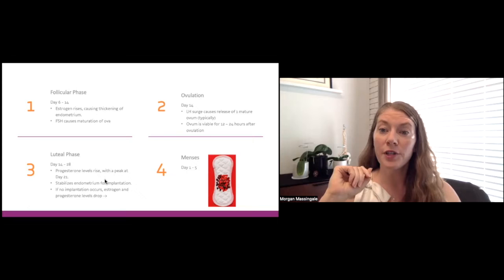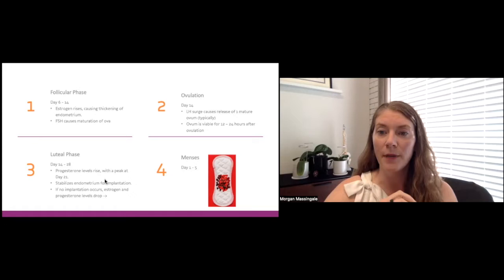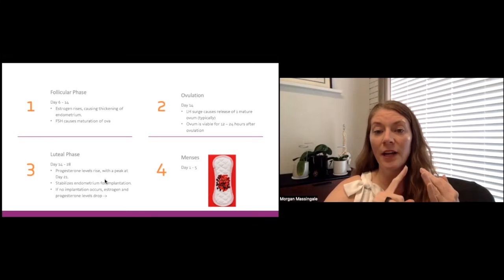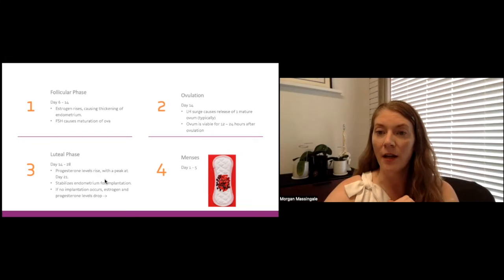That progesterone, that rising progesterone stabilizes the lining of the uterus, which is preparing that endometrium for implantation. If no implantation occurs, the levels of estrogen and progesterone will both drop significantly. And that is actually what causes the shedding of that uterine lining leading to menses, which is actually the start of your next cycle.